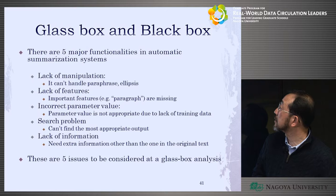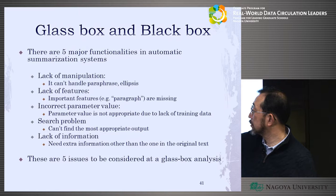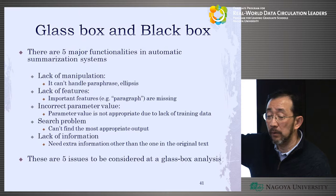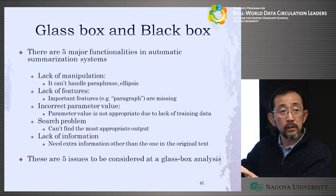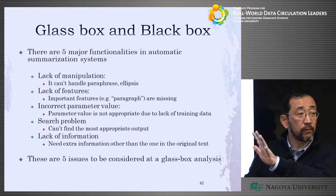As glass box analysis, there are five major functions, because they know how automatic summarization works: manipulation, features, parameter values, search, and information/knowledge — these are the important functionalities in the system. All errors in automatic summarization can be expressed by three black box issues and five glass box issues.